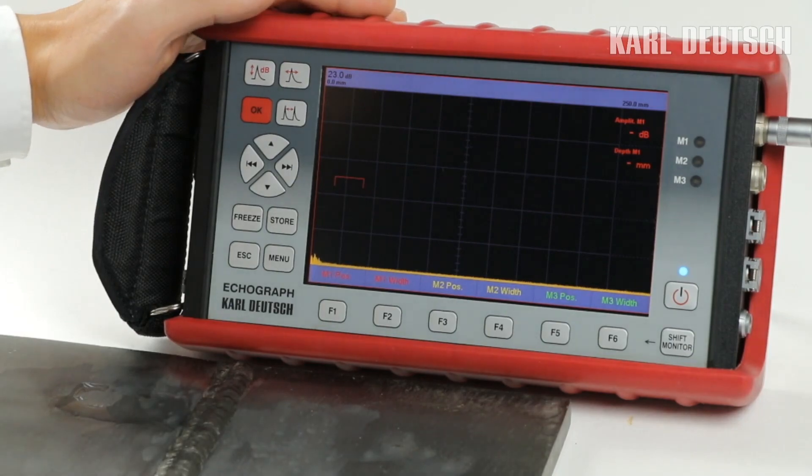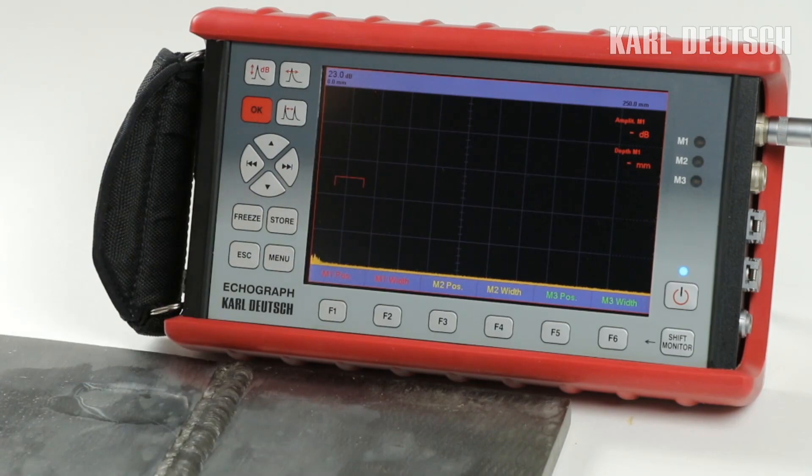The Echograph 1095 is a handy device that weighs less than 4 pounds and has a large 7-inch display that shows the A-scan in full screen format.